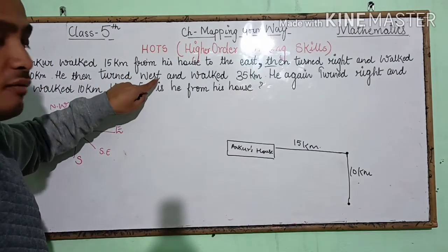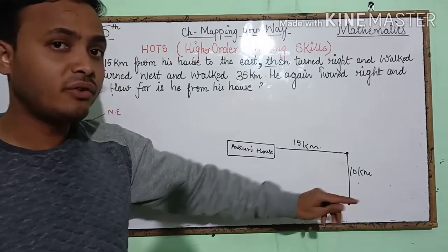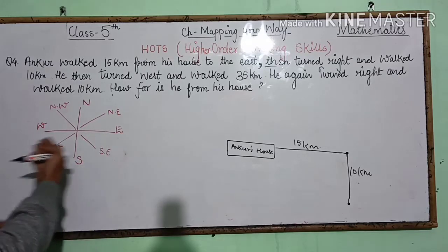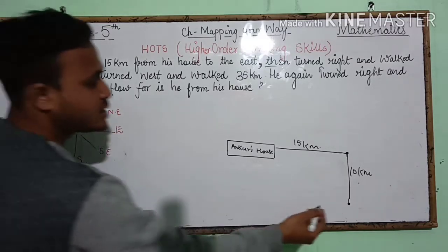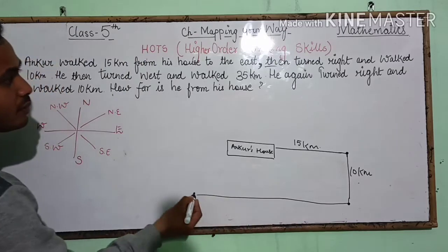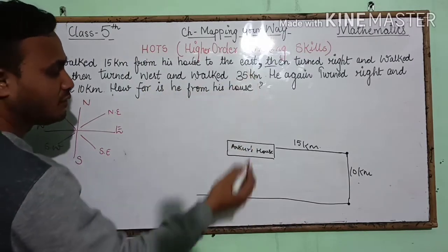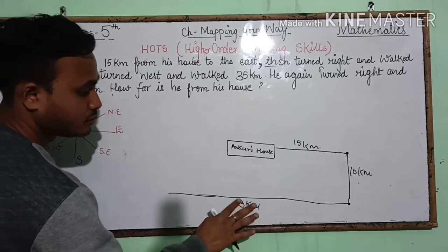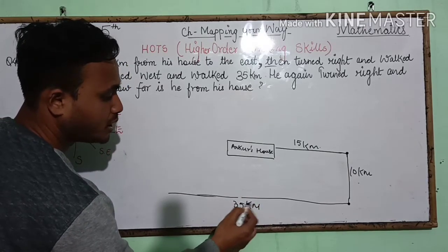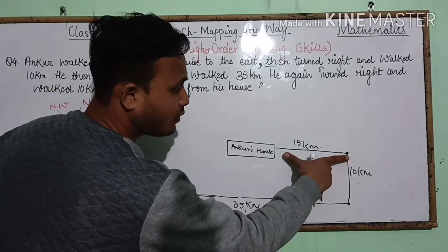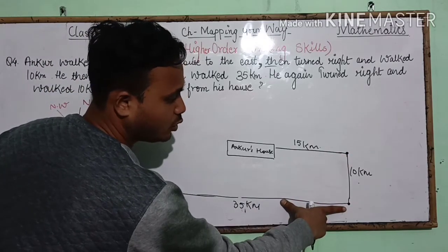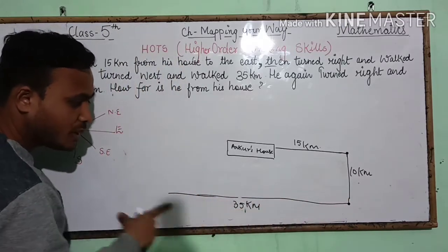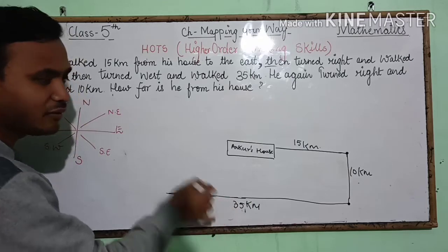He then turned west. When he reached that point, he turned to the west side. Looking at the map, west is toward this side. So he moved west and walked 35 kilometers. Notice the line is longer — 35 kilometers — extending further than the 15 km east line.